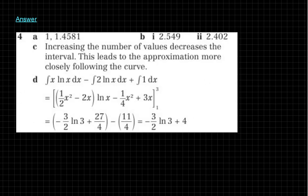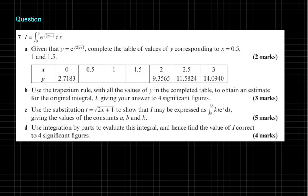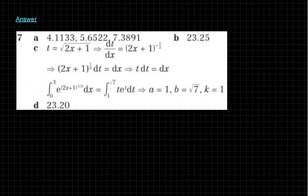The answer to the first question is shown. For the second question, part b uses two strips and part c uses four strips — completing the table and applying the trapezium rule. In part d you integrate the function directly to check your approximation. The final question again uses the trapezium rule, and in part c you integrate using integration by parts to verify. Pause your video now and give these a go.